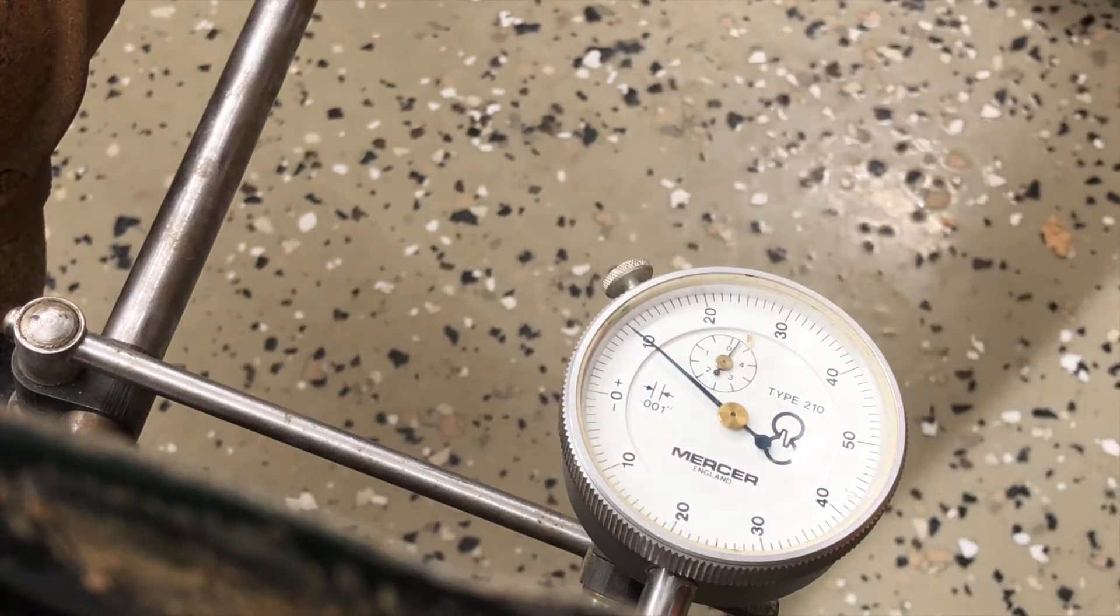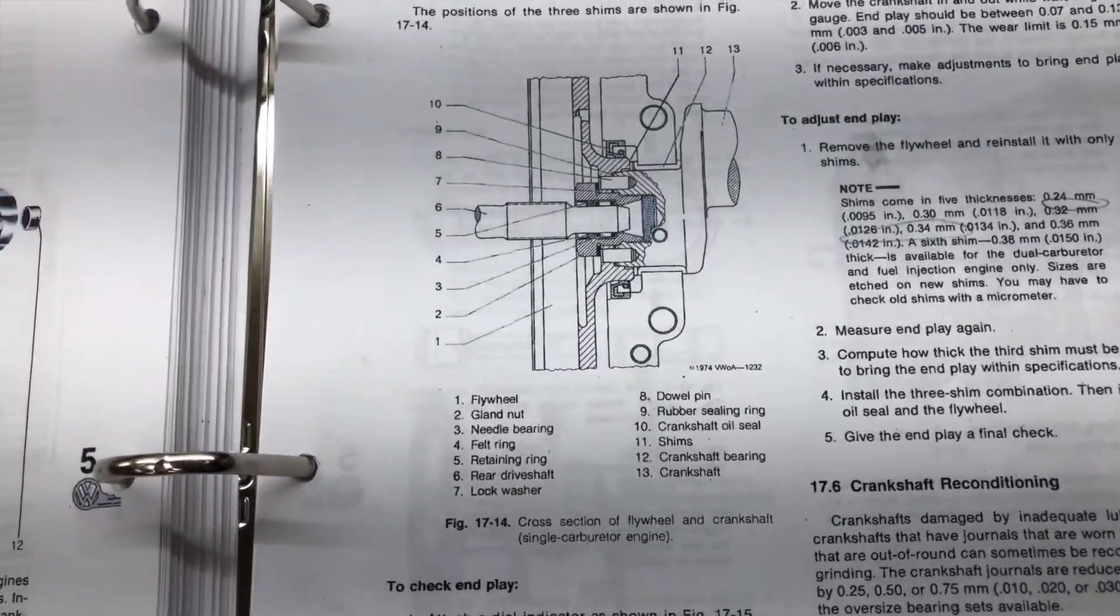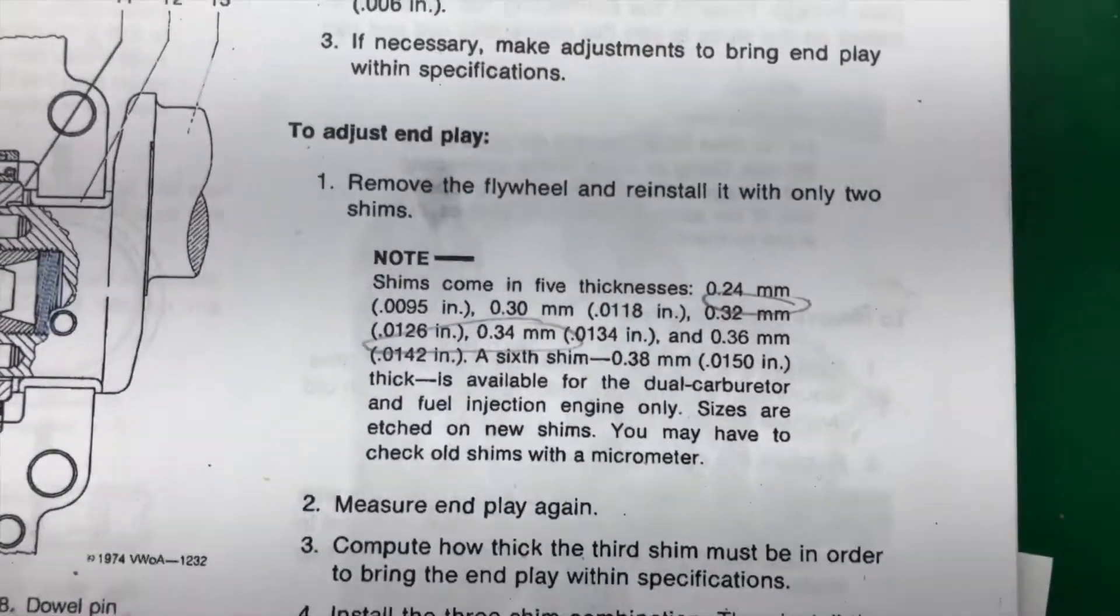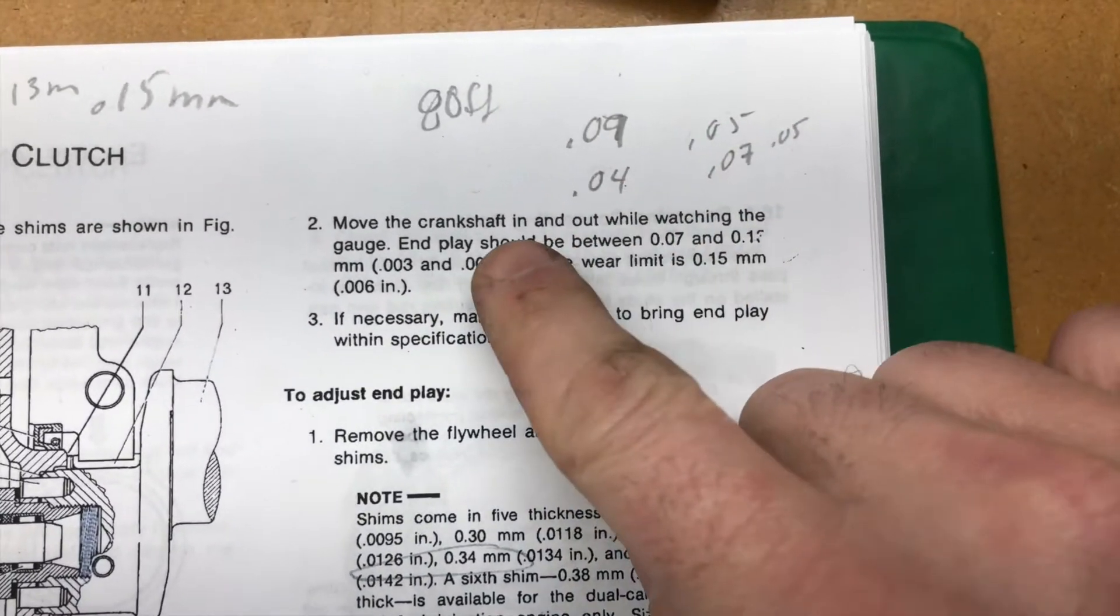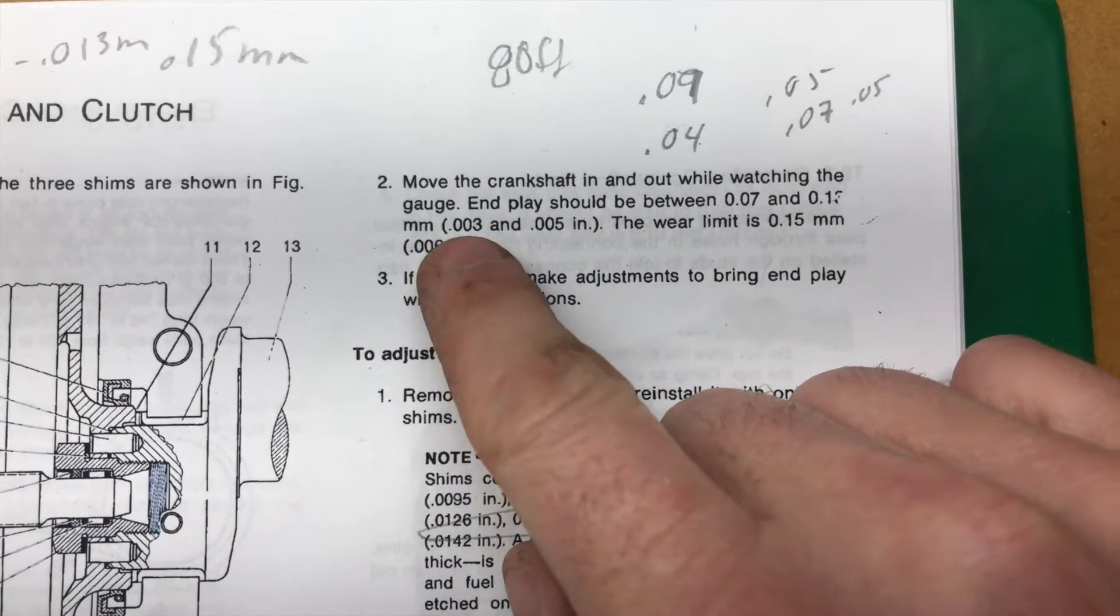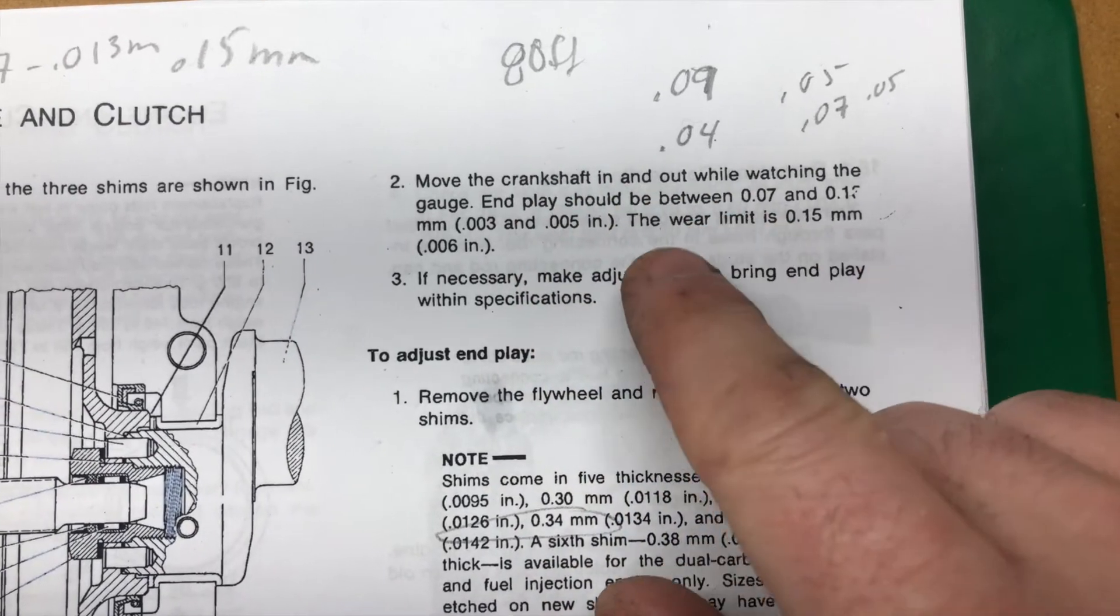If we go to the Bentley, section 66, end play measurements, it tells us that it should be 0.07 to 0.12 mils or 3 thousandths to 5 thousandths. Well I am double that, and the wear limit is 6, so I'm at 10.